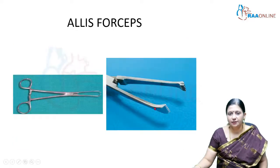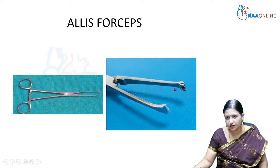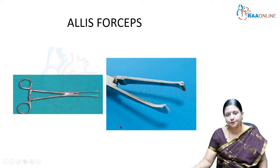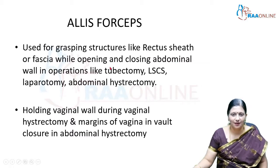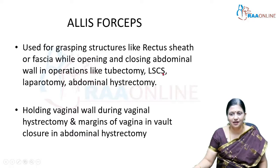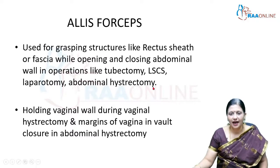The next instrument is the Allis forceps, identified by its multiple teeth. It is a traumatic instrument with a latch, and is used for grasping structures like the rectus sheath or fascia while opening and closing the abdominal wall in surgeries like tubectomy, lower segment caesarean section, laparotomy, and abdominal hysterectomy.